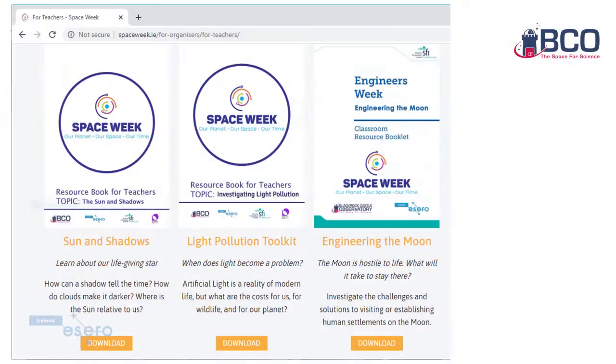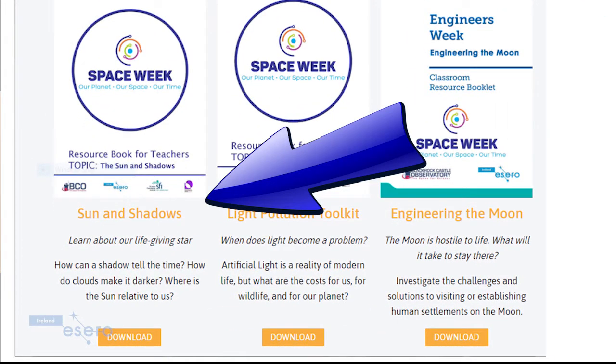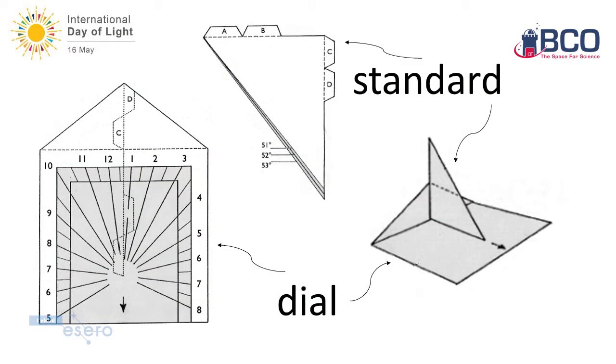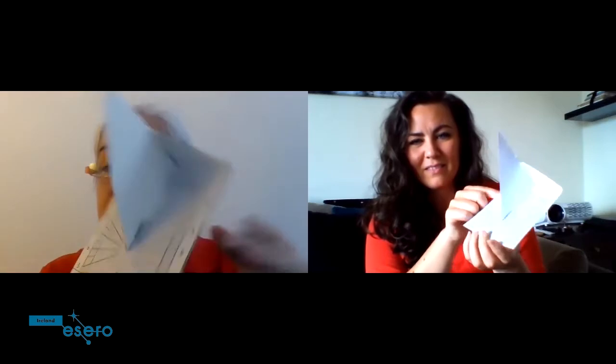If you want to make your own sundial and you don't have an outdoor space, you can make a version in cardboard. Instructions for doing that can be found on spaceweek.ie under the 'For Teachers' section, because we originally developed this for schools — but anybody can do this. Once you've got it made, take it outside and see how it works. The gnomon sticks up, the dial has the time on it, and depending where the shadow is cast, it tells you the time.